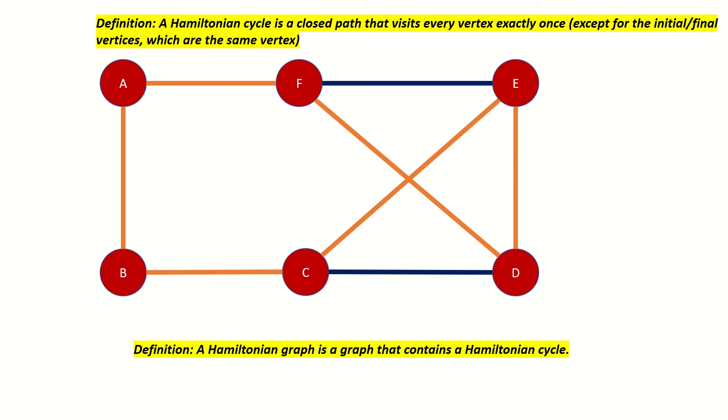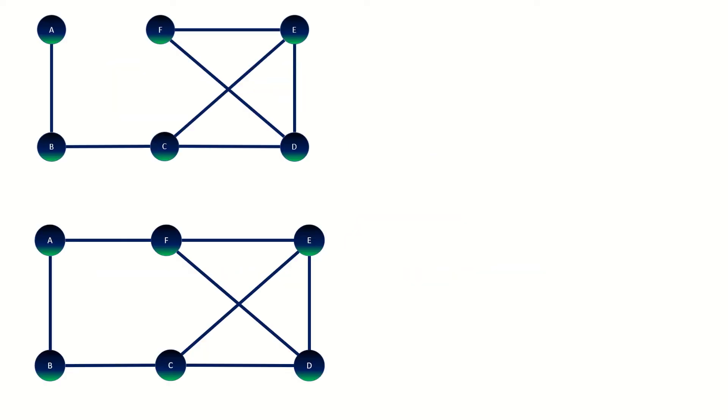Notice that if a graph does have a Hamiltonian cycle, it also has a Hamiltonian path, which is just a Hamiltonian cycle minus that final step that would have brought us back to our initial vertex. However, not all graphs with Hamiltonian paths have Hamiltonian cycles.